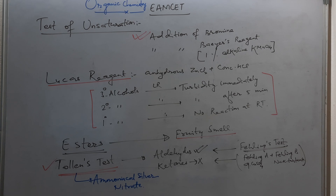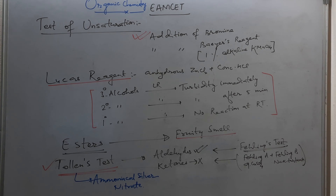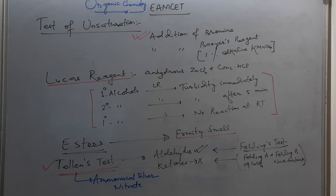Esters are detected by their fruity smell. As we know, carboxylic acid reacts with alcohol in the presence of acid to form esters. Esters have a fruity smell — most fruits are smelled due to the presence of esters.